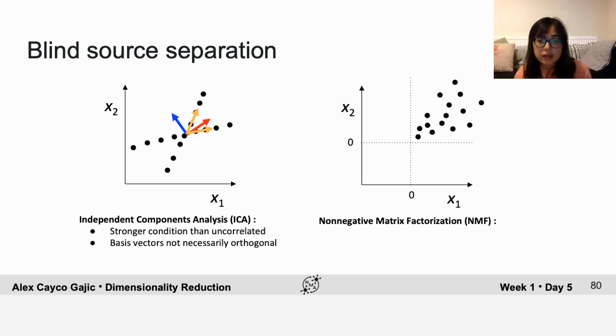Another example is non-negative matrix factorization, which is useful when you have positive data because it assumes that your weights and components are positive. This can also make your results much more interpretable.